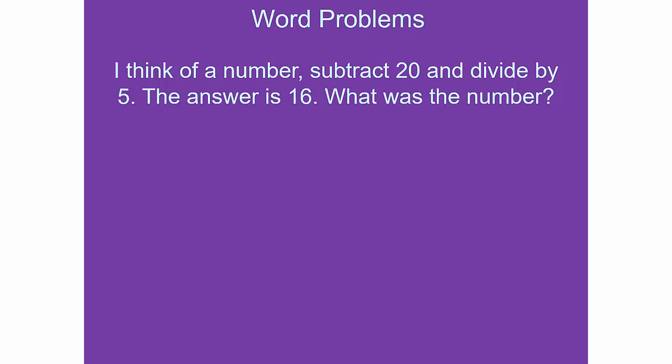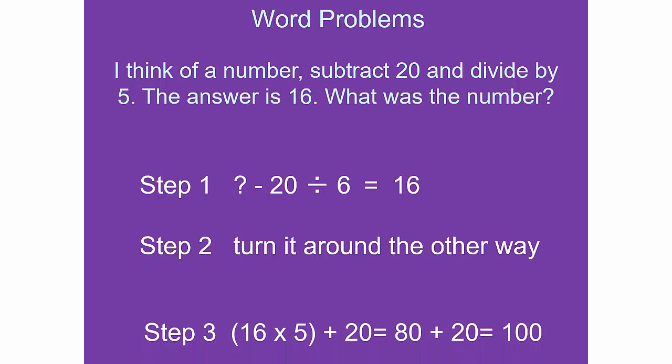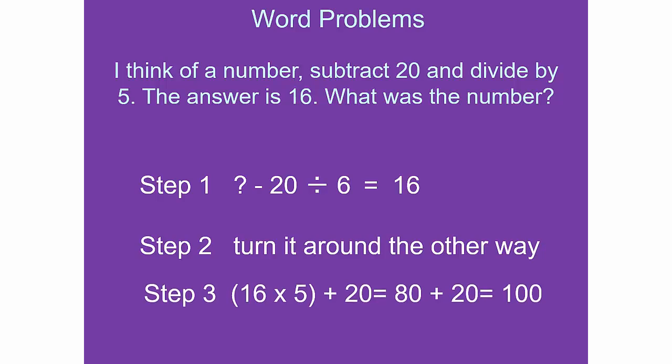Think of a number, subtract 20, and divide by 5. The answer is 16. What is the number? The best way is to use X for the unknown and work backwards. Solving the equation gives you 100.